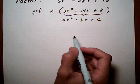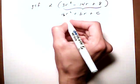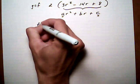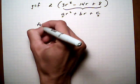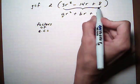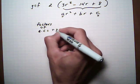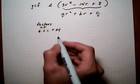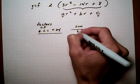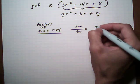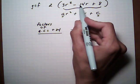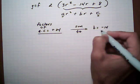To factor it we want to look at the factors of a times c. In this case that would be 3 times 8 is 24, and the sign is really important. So it's the factors of positive 24 that we're going to look at. We want to find factors that sum to b or the middle term, which in this case is negative 14. The sign is really important.